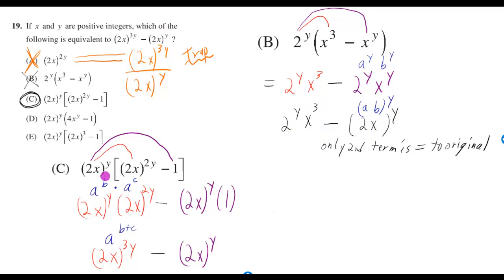But C is the one that works. If you distribute 2x to the y to 2x to the 2y, well then you're just going to add the exponents because they have the same base. You can put the rule a to the b times a to the c equals a to the b plus c. You add exponents when they have the same base, the a in this case being the base, or the 2x in the case of the red lines.